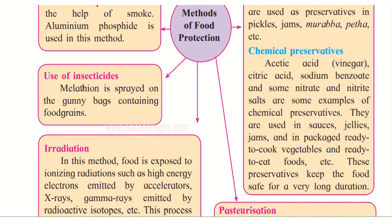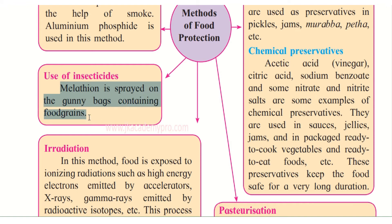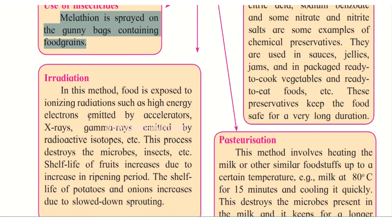The next method is use of insecticides. Melathion is sprayed on the gunny bags containing food grains so that insects don't come and attack the bags.